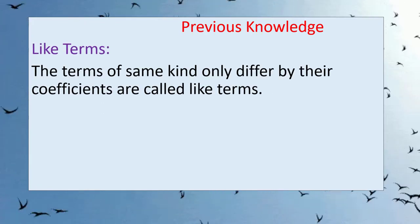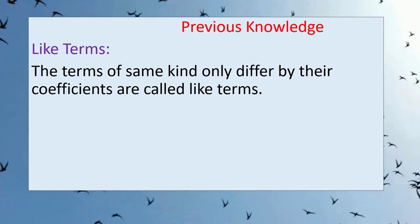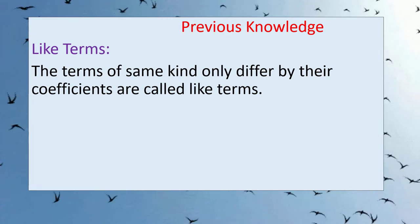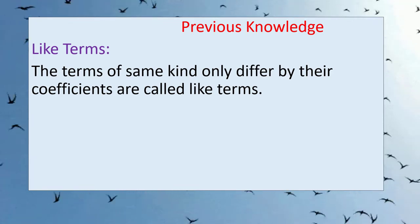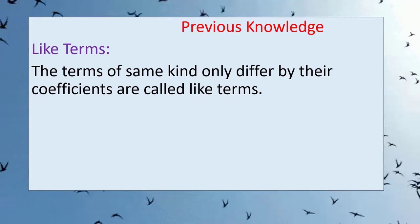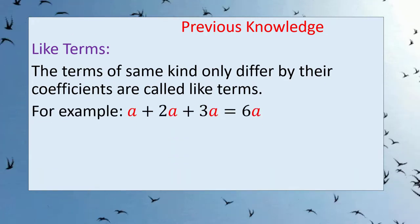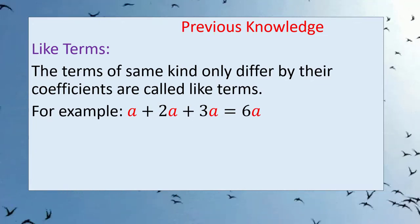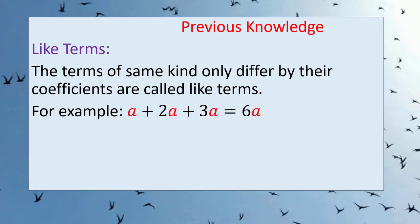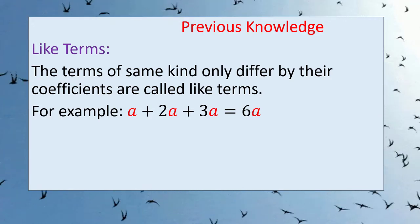Students, let's recall the definition of like terms. The terms of the same kind that only differ by their coefficients are called like terms. Like terms are those terms whose variable and exponent are the same, but their coefficient changes. The multiplying factor of the variable is called the coefficient. Variable is a quantity whose value can be changed. For example: a plus 2a plus 3a — in this example, all three terms have the same variable 'a' and the same exponent, so we can add them.